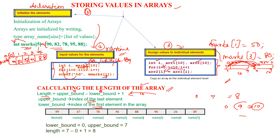Taking the same example: what is your lower bound? It is 0. What is your upper bound? It is 7. So the length will be 8, because 7 minus 0 plus 1 equals 8. This is how you calculate the length of the array.